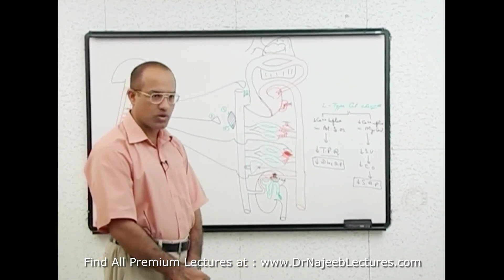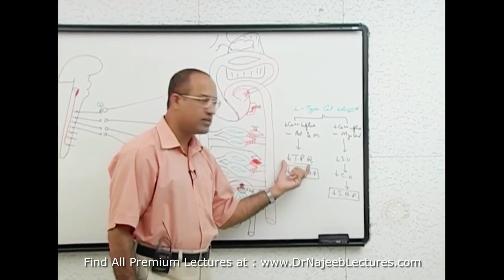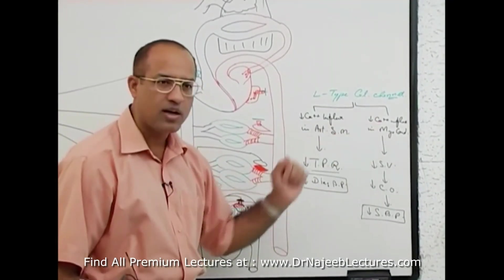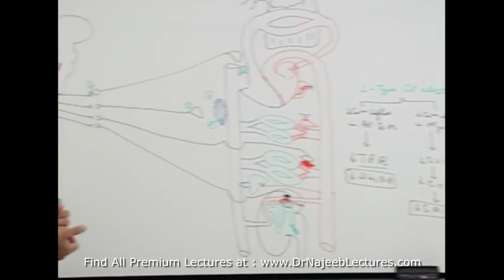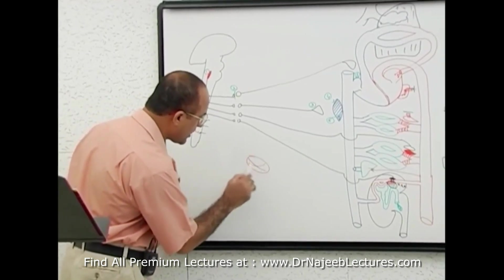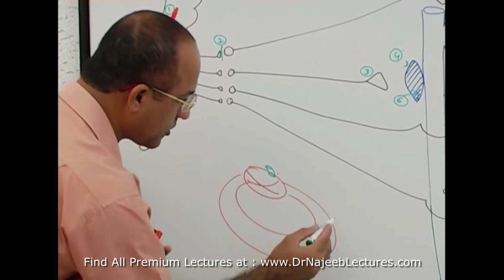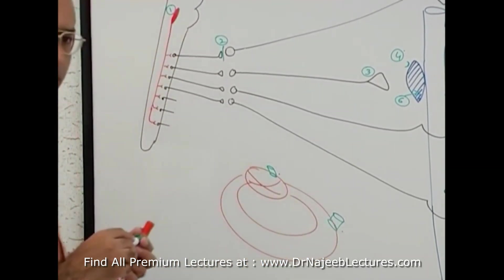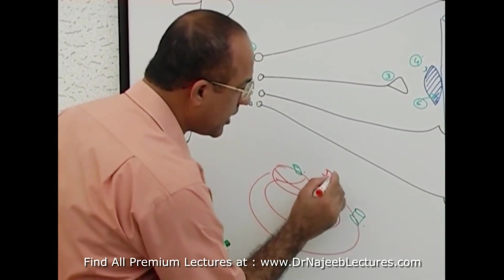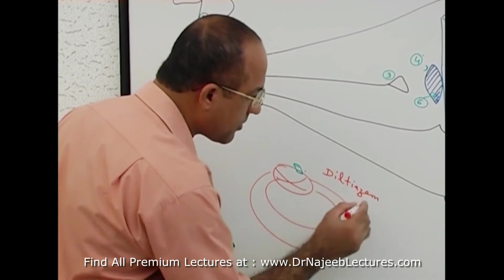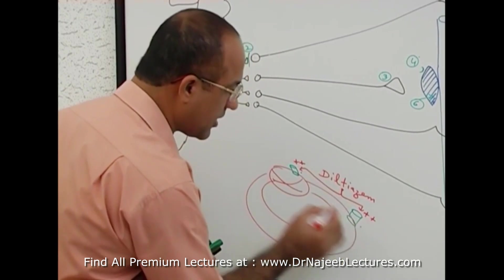These are the two main mechanisms by which calcium channel blockers work. One important point to remember: some calcium channel blockers mainly work on arterial smooth muscle, others mainly work on myocardial cells, and still others block both sides. A classical example of a drug that blocks both smooth muscle calcium channels and myocardial calcium channels equally is Diltiazem.